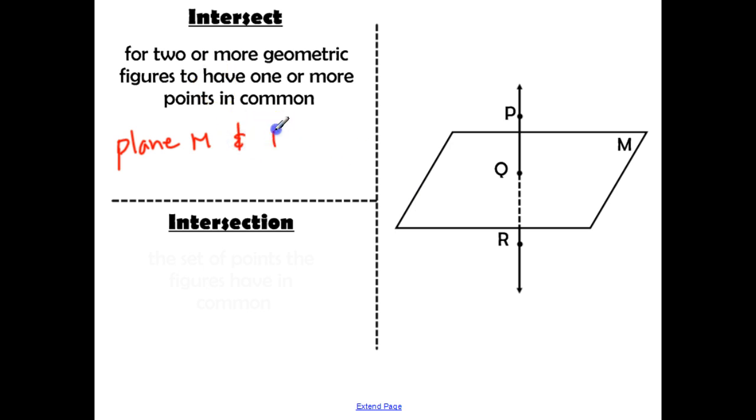Those are intersecting with each other. So I'm just going to label this as line PR. Now, we know that there are multiple ways that you can label that line, but I'm just going to label it that way. Now, let's take a look at the term intersection. So this is the noun, and it's the set of points the figures have in common. So we want to talk about the line and the plane and what exactly do they have in common. Now, if we did take a piece of paper and puncture it with the pencil, the only thing they have in common is that hole that we made in the paper with the pencil. So the only intersection we have is point Q. So that is the intersection of plane M and line PR.